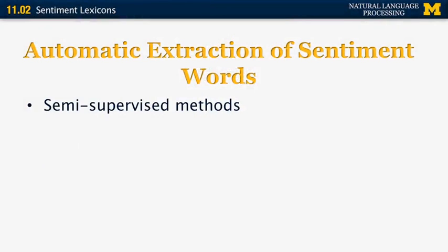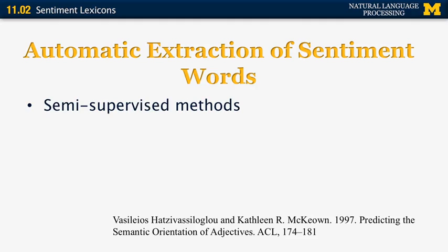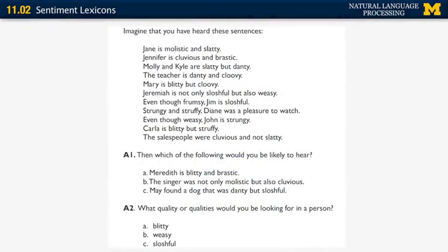In addition to dictionary methods, there are also semi-supervised methods. The first one was developed by Hatzivassiloglou and McKeown in an ACL paper from 1997. This also gives us an opportunity to look at a NACLO problem that incorporates some of the ideas in this method. The NACLO problem is called Molistic, and it's about adjective polarity where all the adjectives are not real English words — because with real English words it's easy to figure out polarity just by looking at them, so using unknown words makes the problem more instructional.